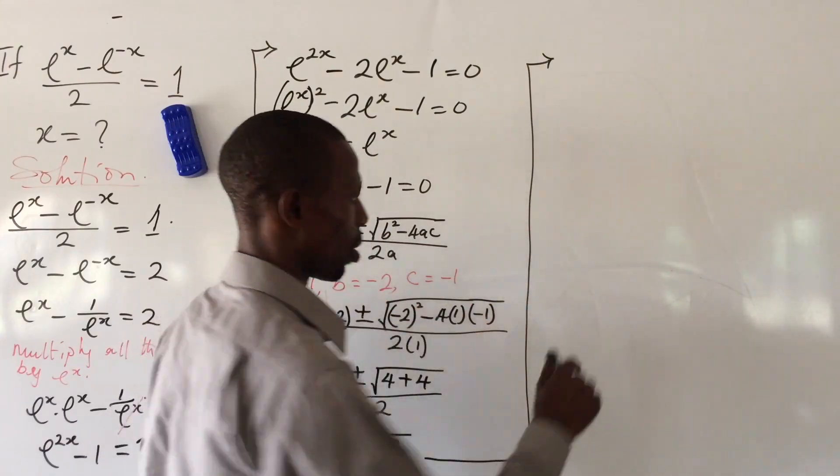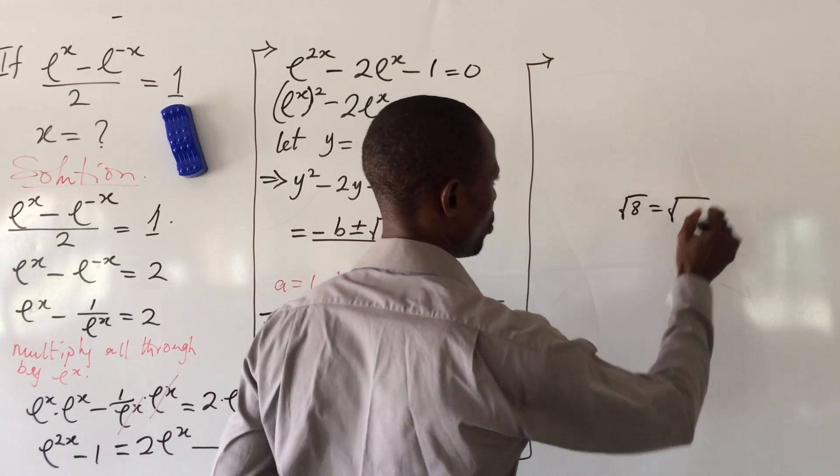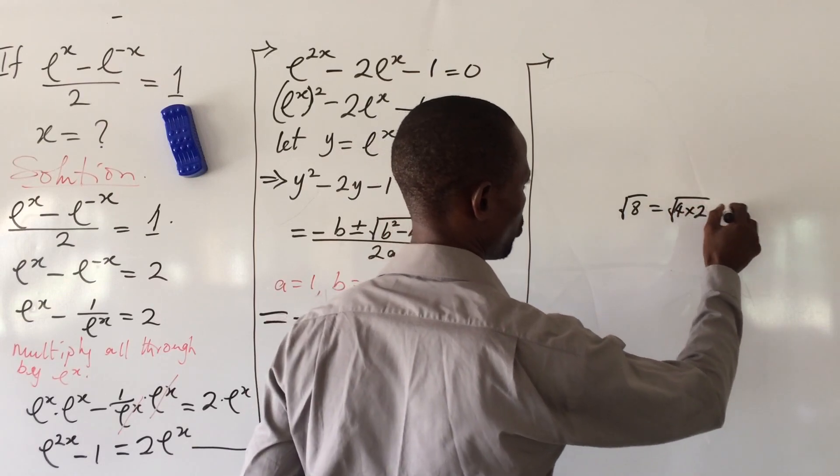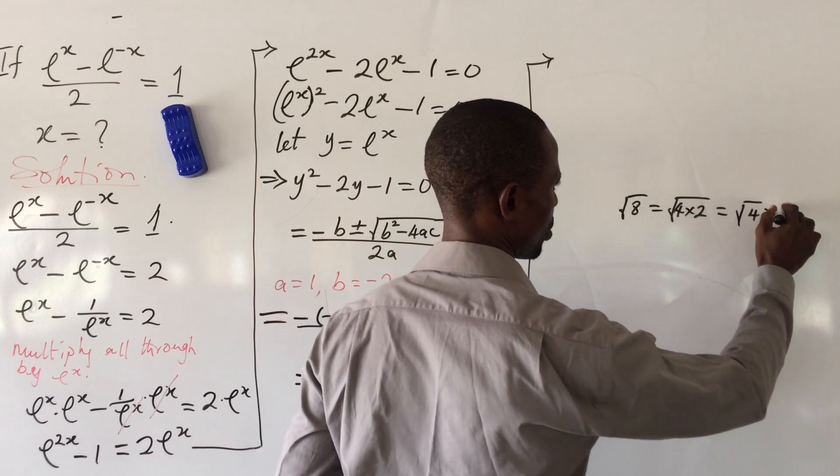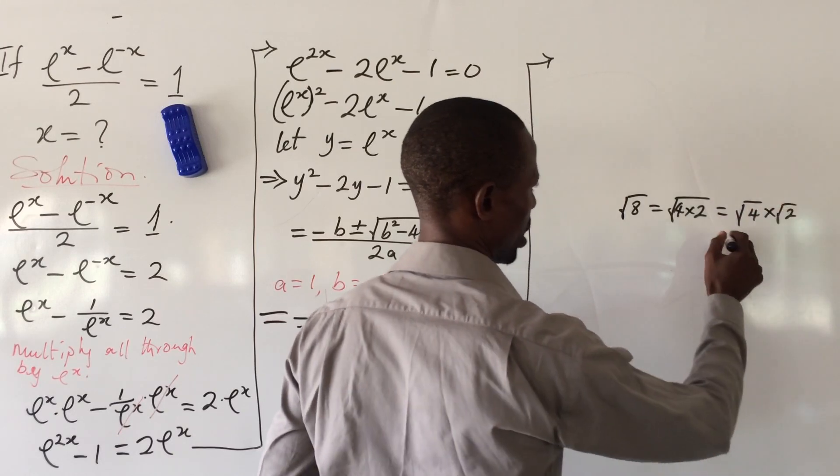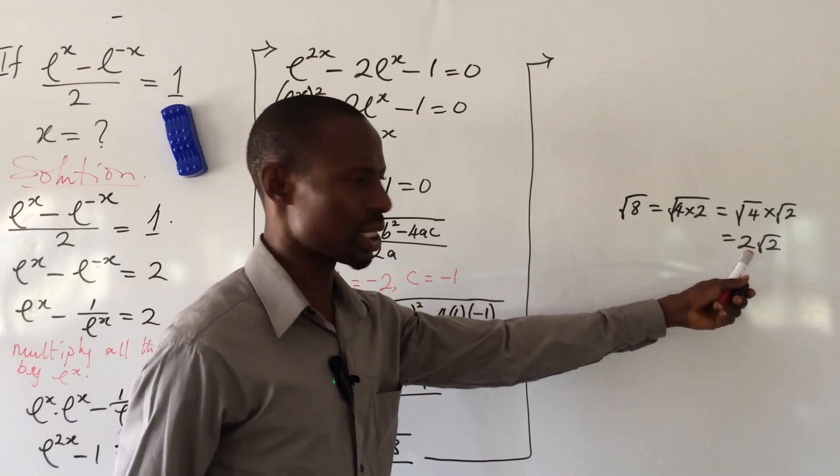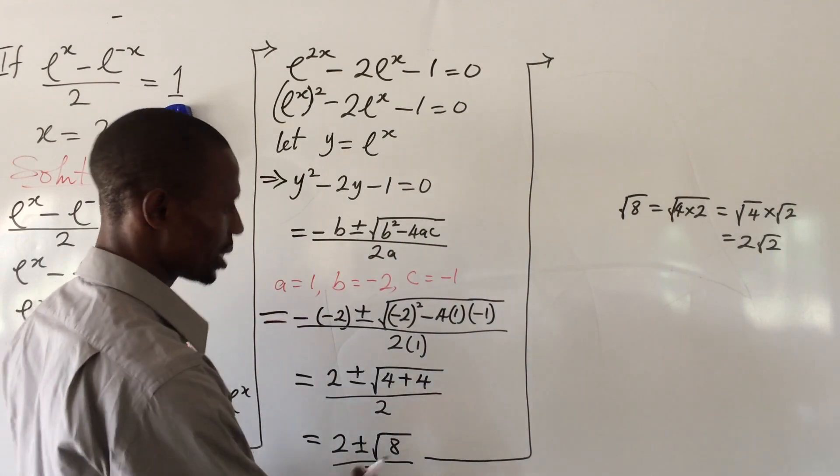According to surds, if you have root 8, this is the same as root 4 times 2, which is root 4 times root 2. Root 4 is 2, so root 8 can be written as 2 root 2.